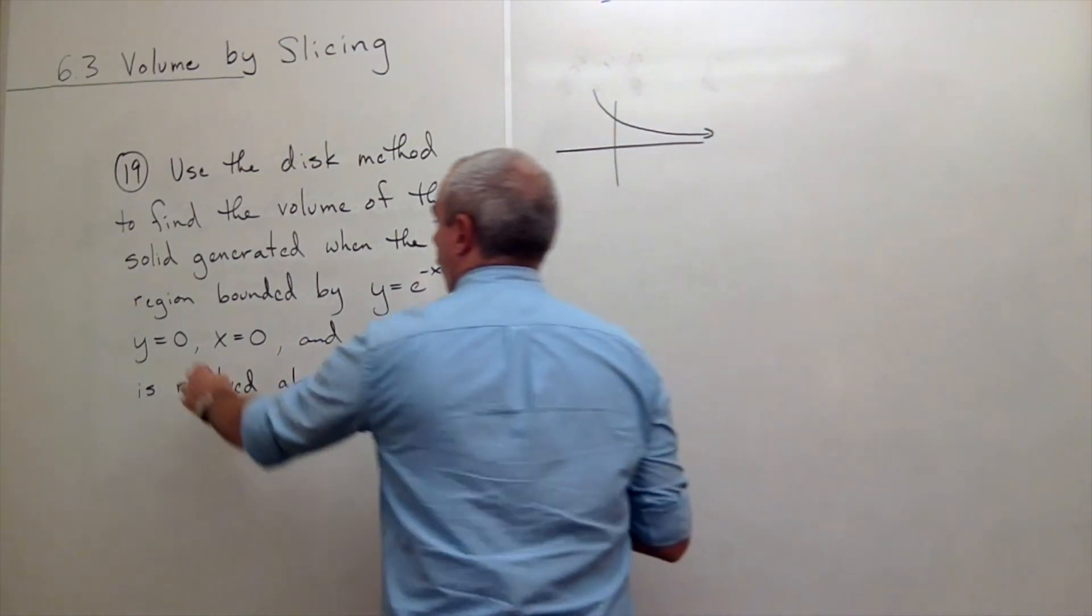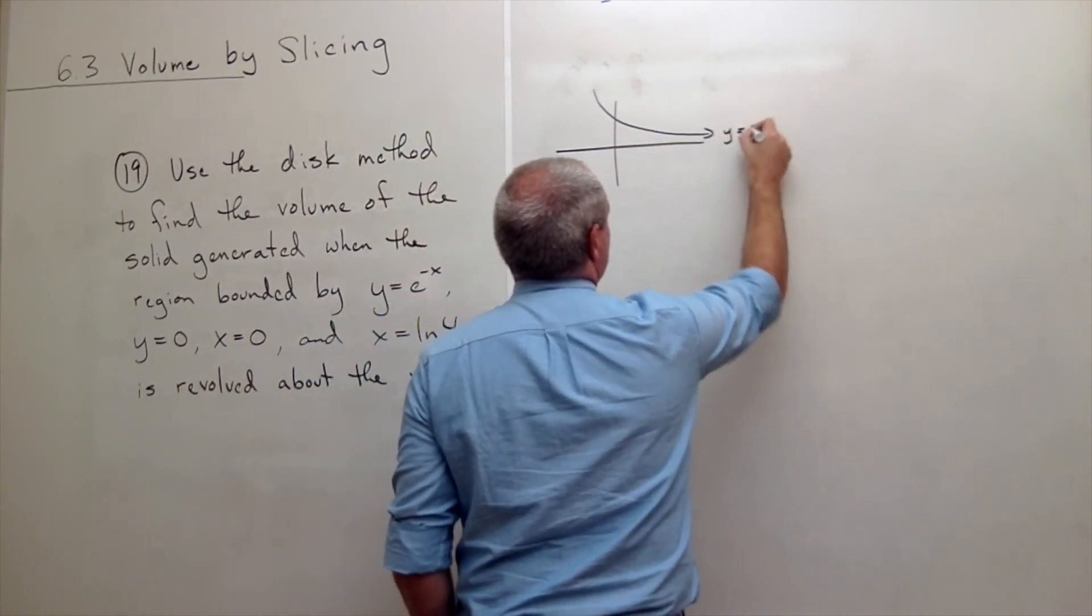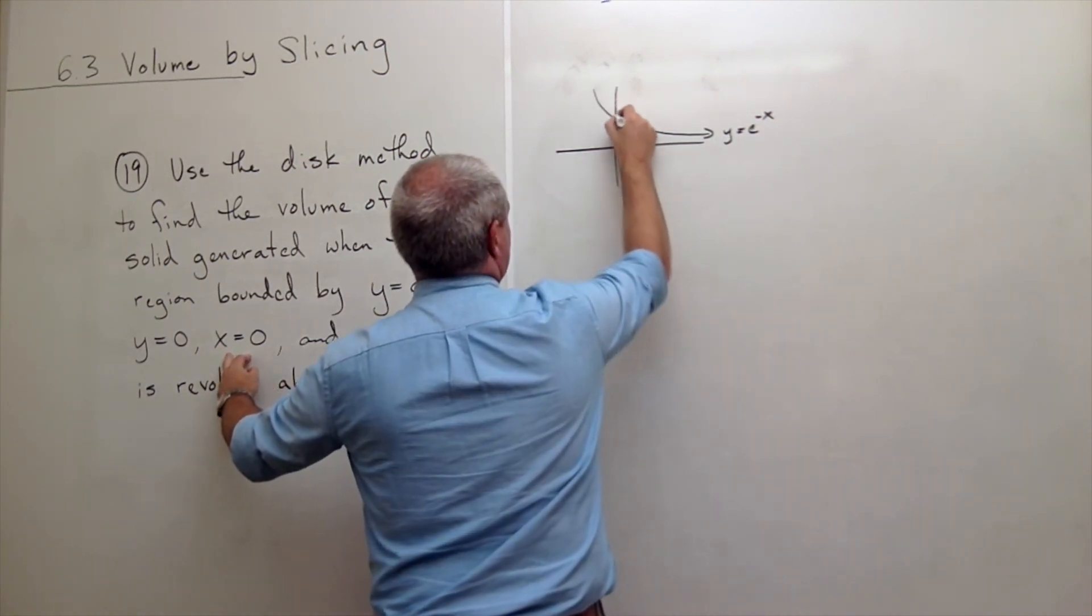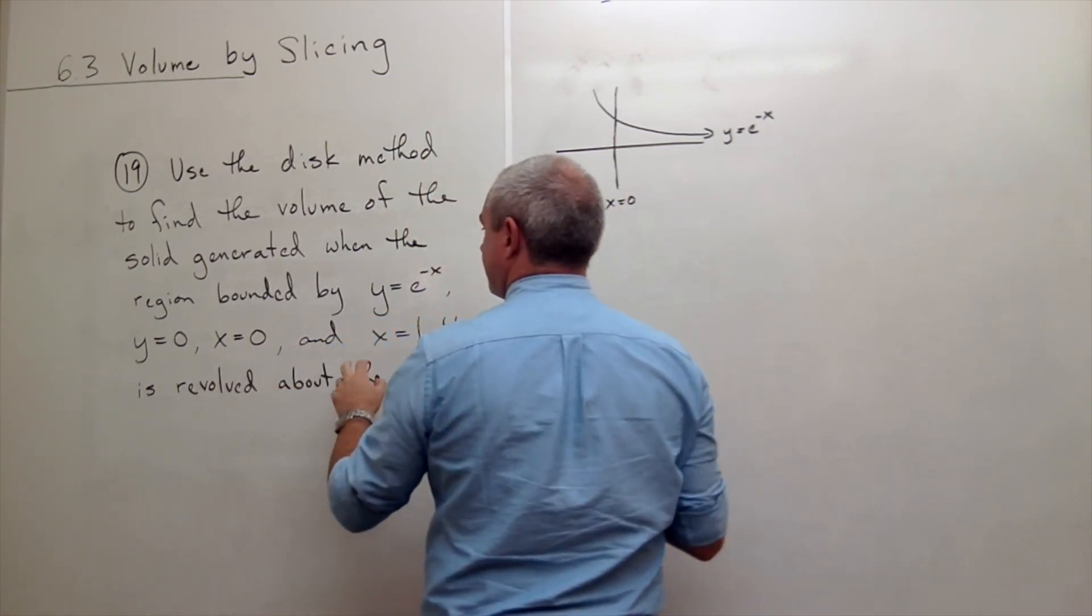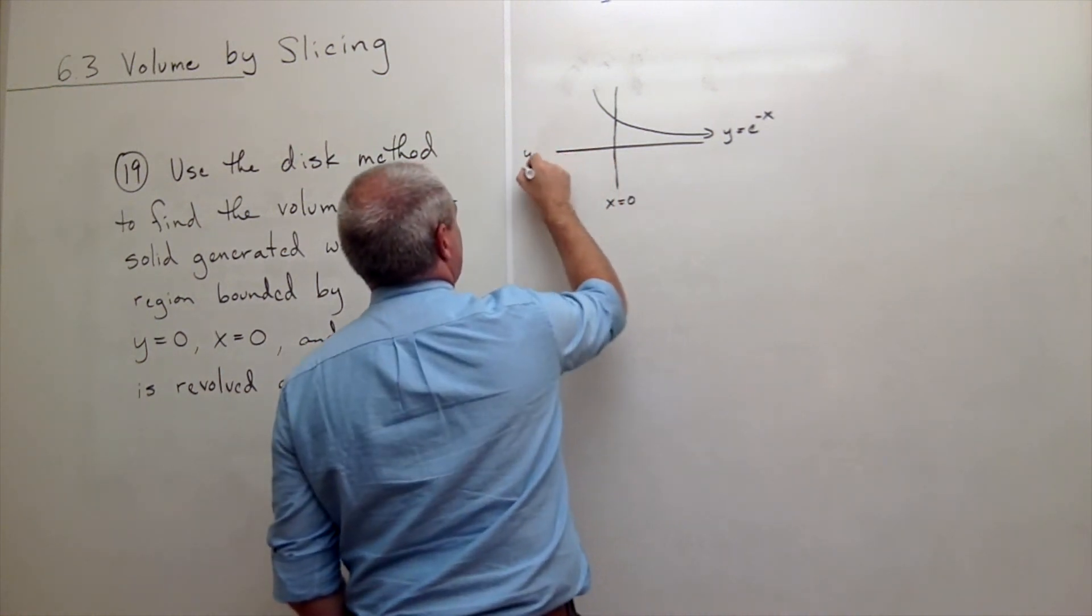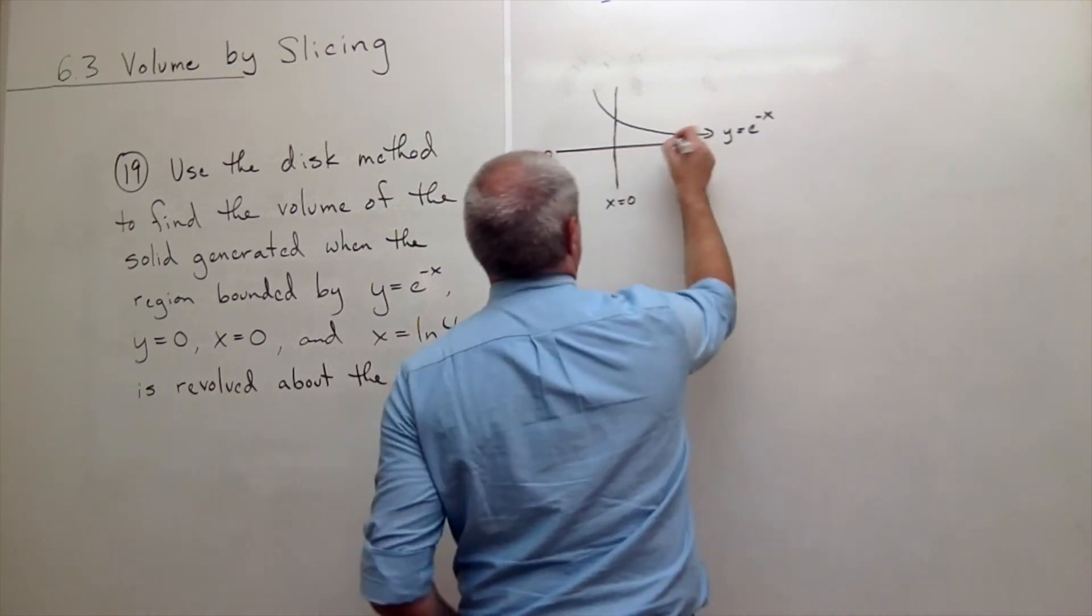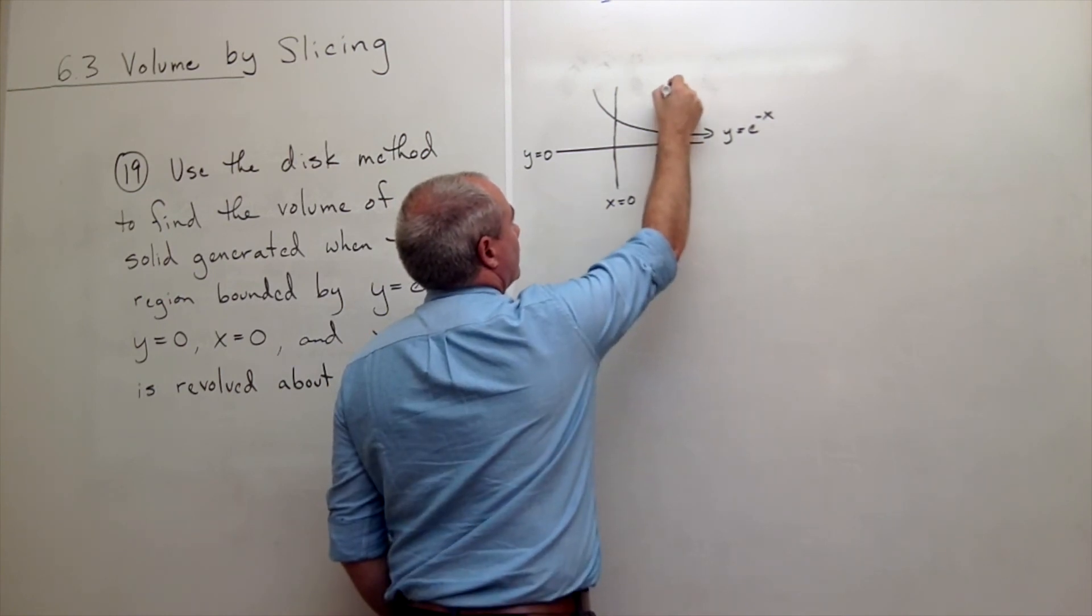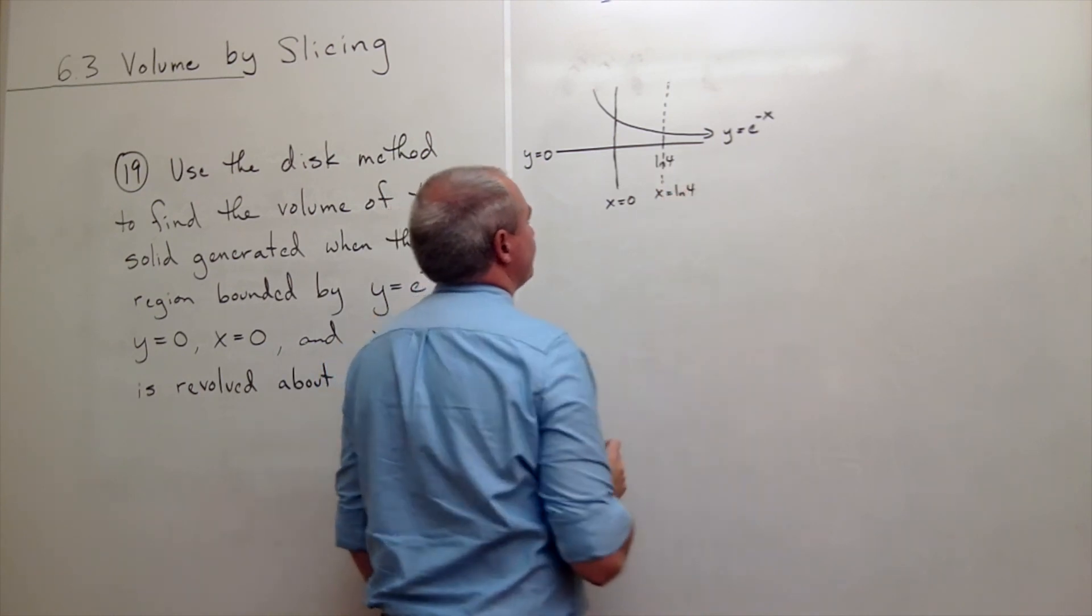Second one is y equals 0. By the way, this is y equals e to the minus x. We've got x equals 0, which is the y axis. This is x equals 0. We've got y equals 0, which is the x axis. This is y equals 0. And then finally we have x equals ln of 4.